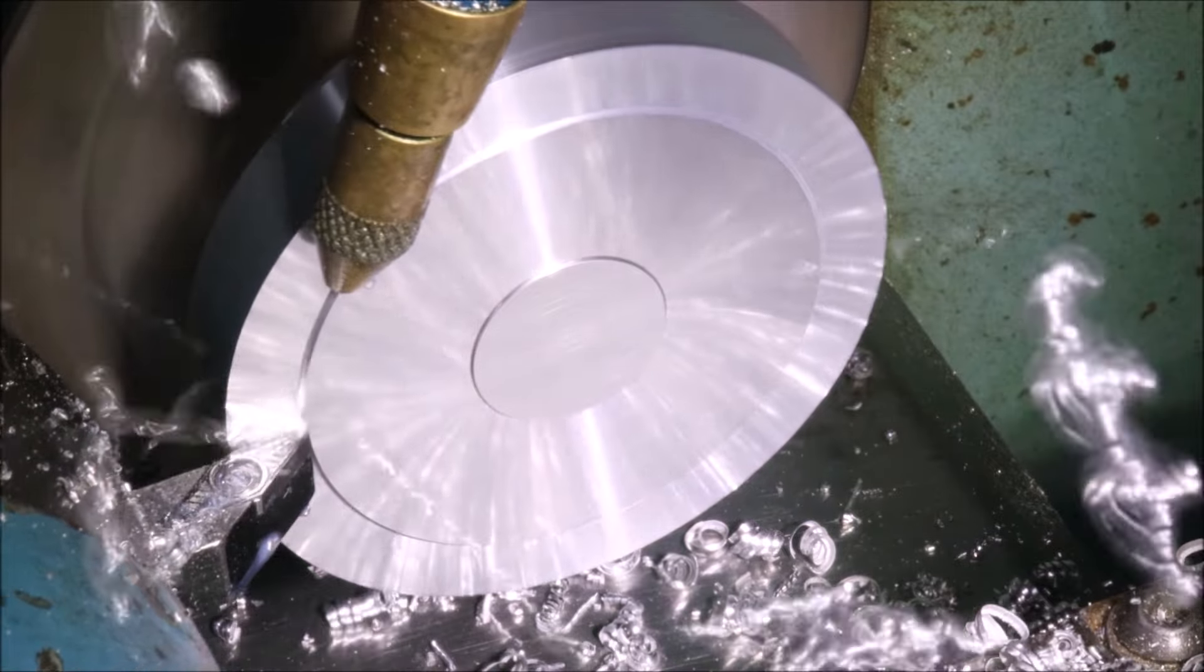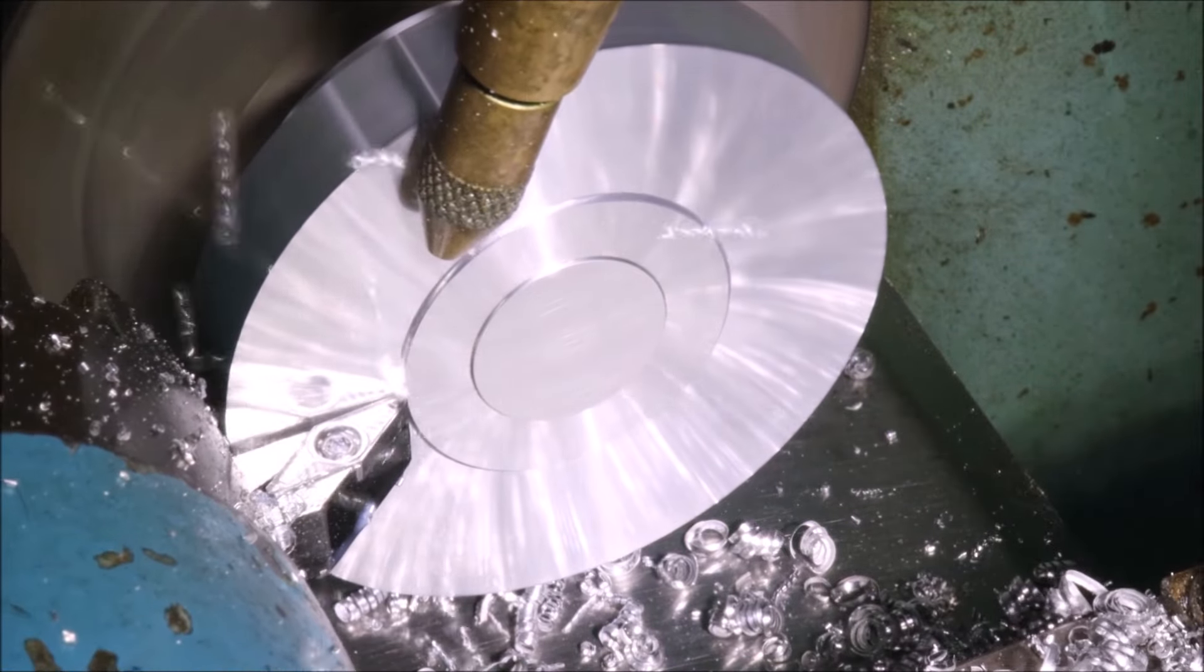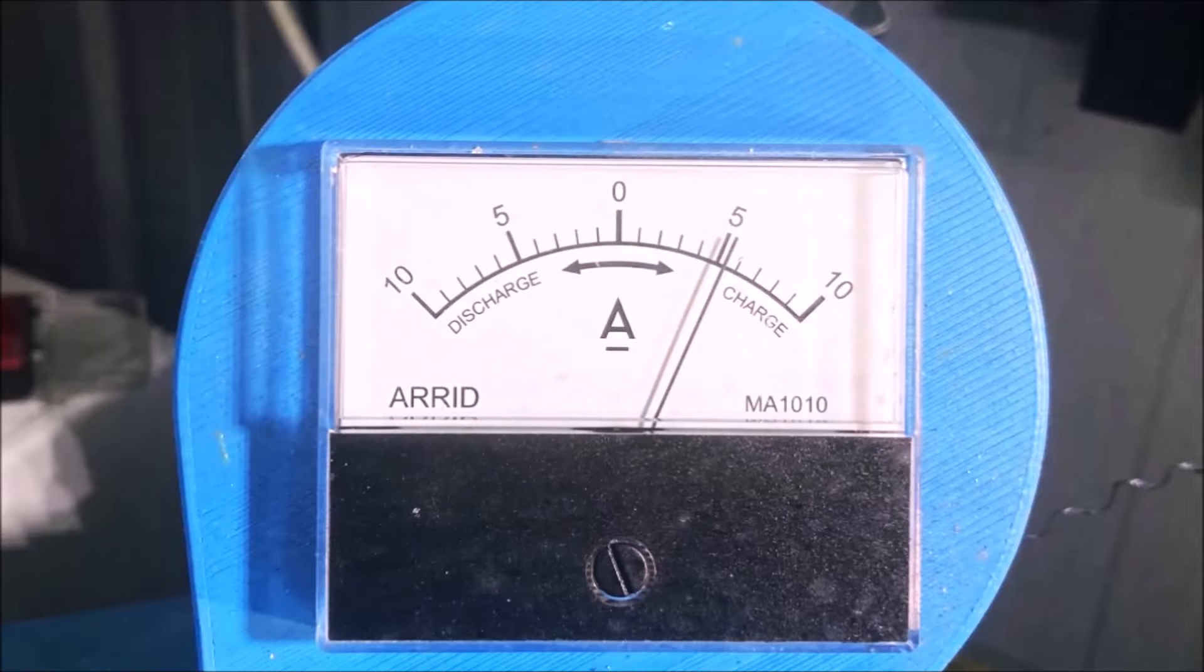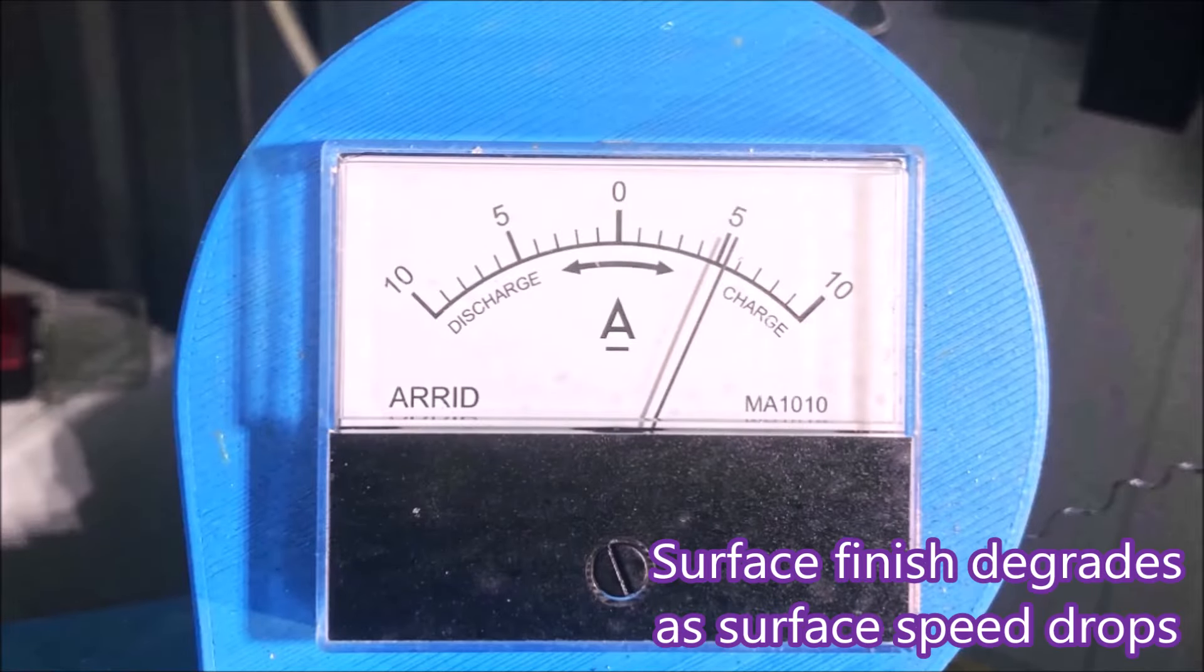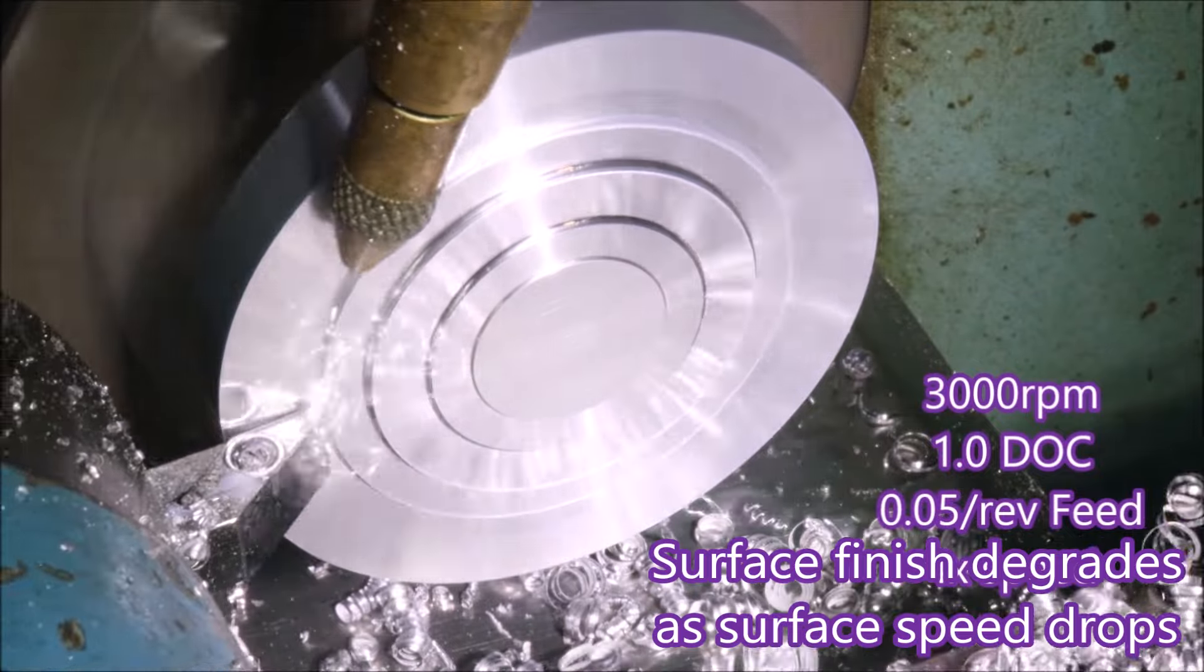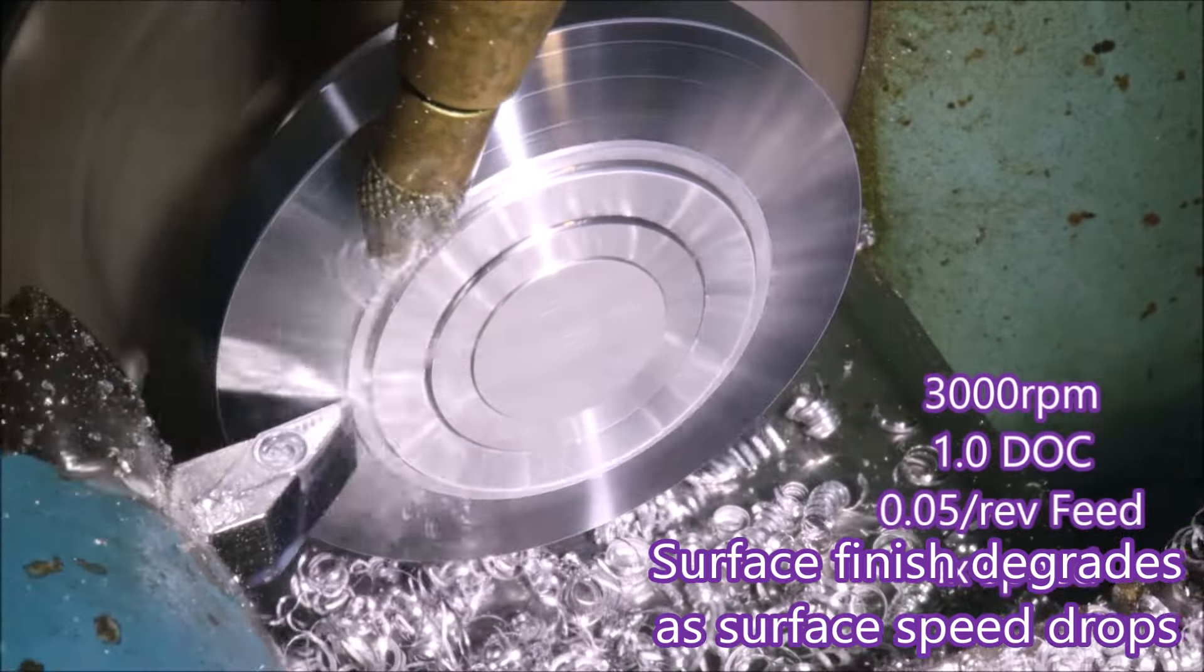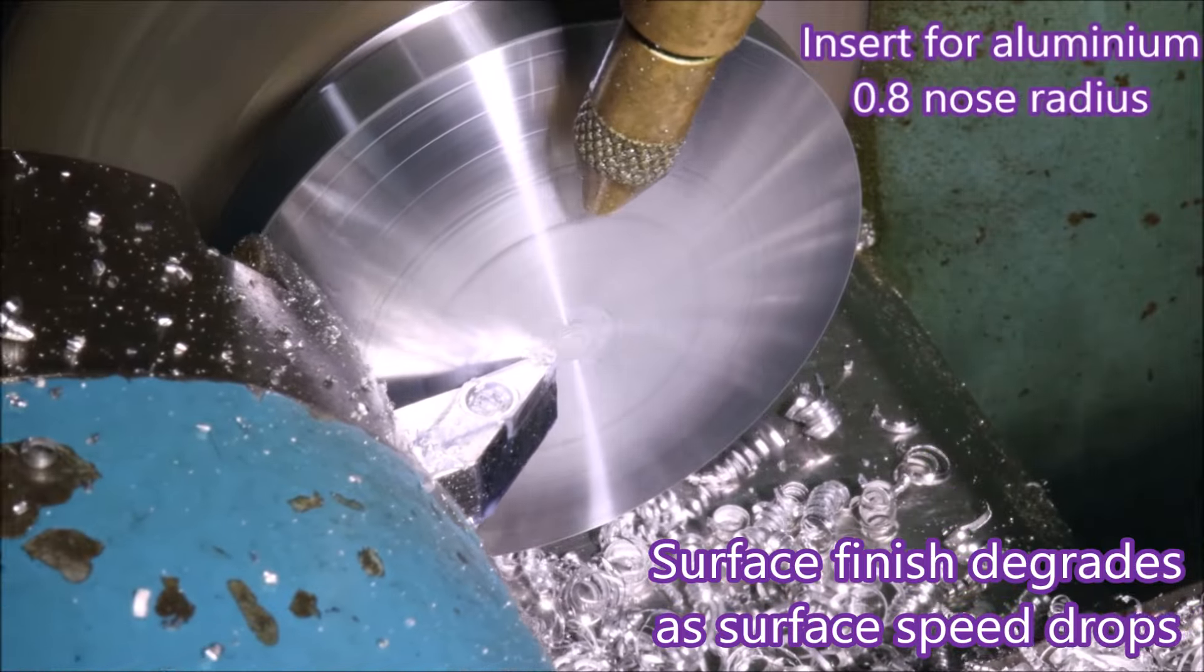And here we're cutting the toolpath that I created. You see we're drawing just over five amps, which is the proper current, the maximum current draw for my motor. Can't do much more than that with a half horsepower lathe.